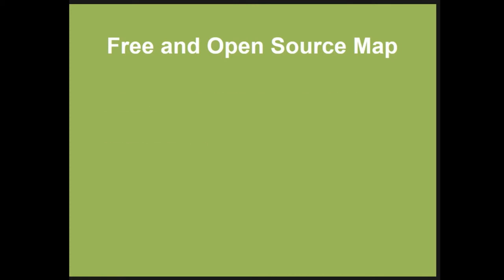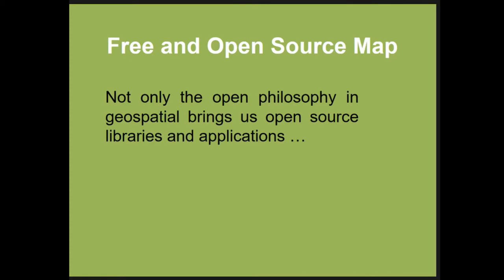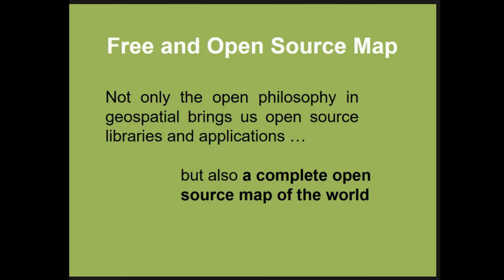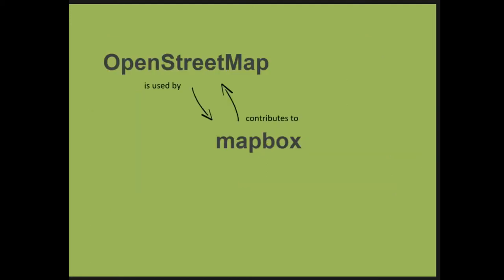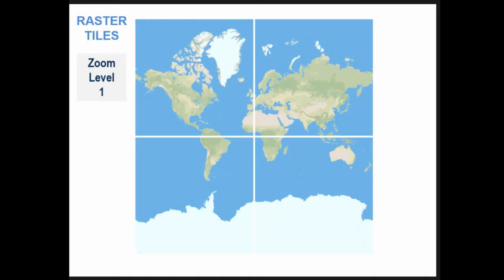Now I'd like to talk about how the open philosophy in geospatial also brings us a complete open source map of the world: OpenStreetMap. Something very specific I want to highlight is that a company decided to contribute to OpenStreetMap and provide new open source facilities — specifically the technology of vector tiles.